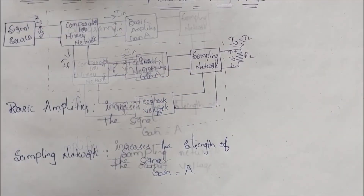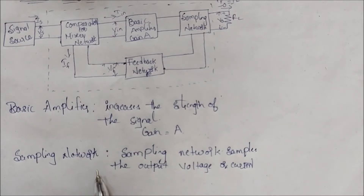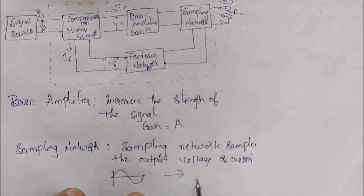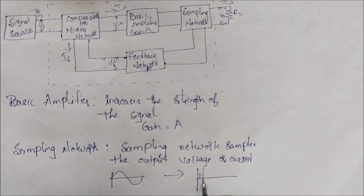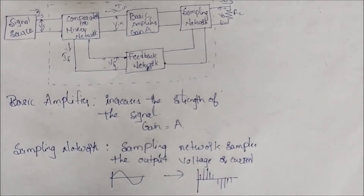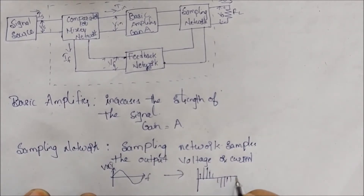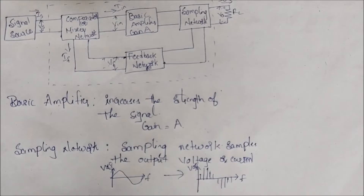Next, I will show the sampling network. The sampling network samples the amplifier output voltage and current. It takes the output signal and divides it — one part goes to the load, and the other part is fed to the feedback network. Here we have the block diagram for the sampling network.